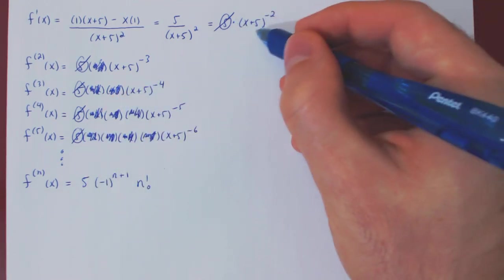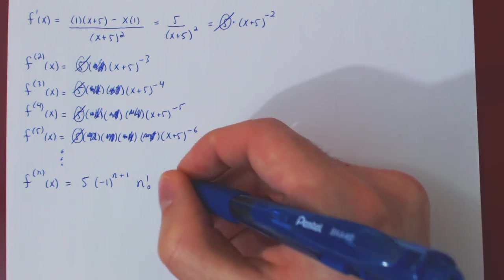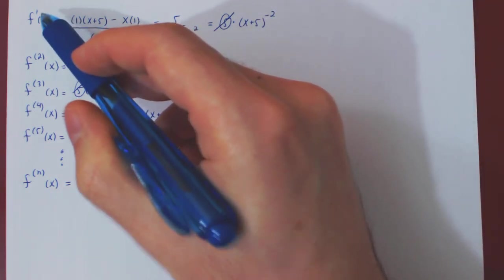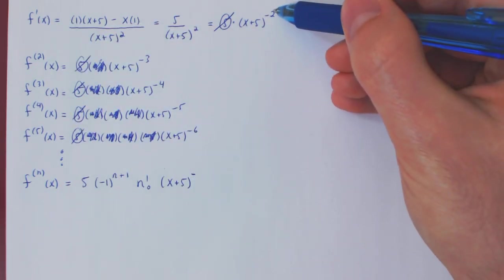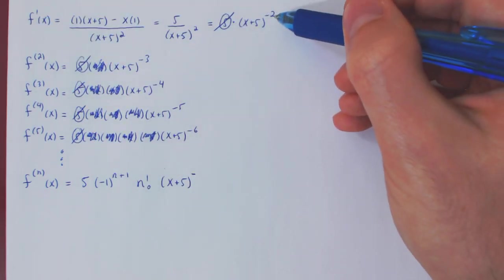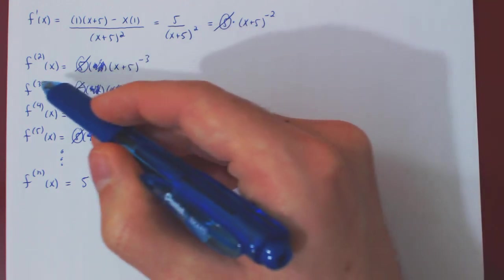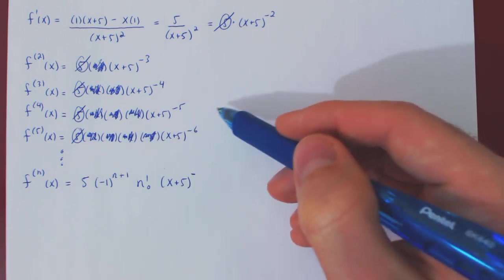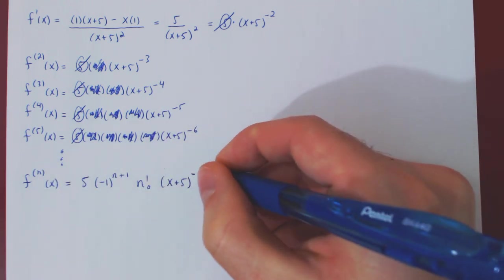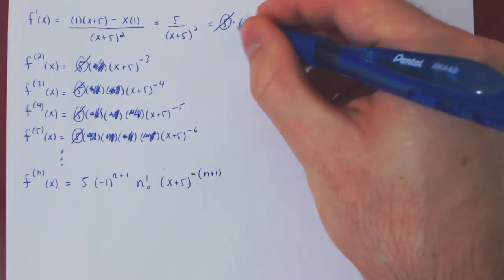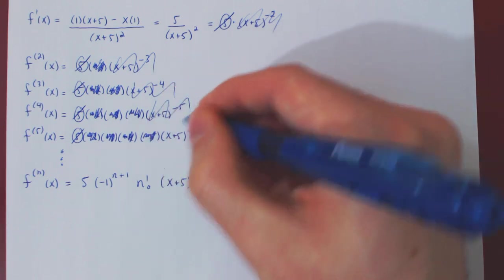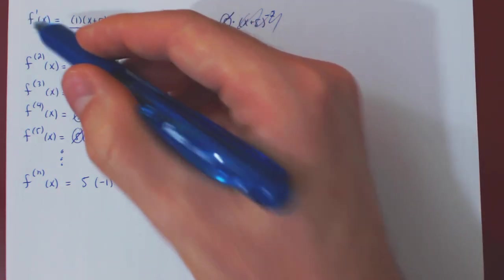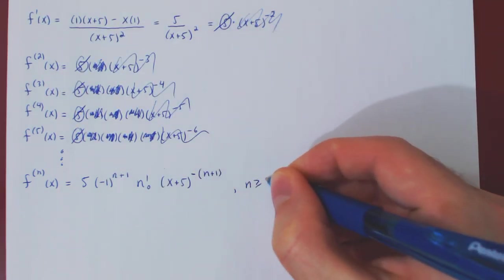All that's left is the power of x plus 5, which is always negative. Looking at the positive part of the power: for the first derivative it's 2, second derivative it's 3, third is 4, fourth is 5, fifth is 6 — it's always 1 more than the derivative number. So this would be not negative n but negative n plus 1. We have now captured the general formula for the nth derivative of the function at x, and this is only valid if n is at least 1. If you plug in n equals 0, you will not get the zeroth derivative.